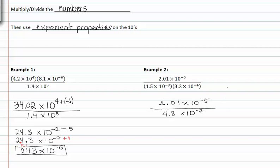Now I take 2.01 and divide it by 4.8 to get 0.41875 times 10 to the negative 5 minus negative 7. And notice that since it's in the denominator, I subtract it from what's in the numerator.